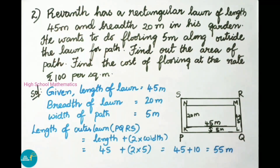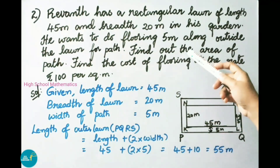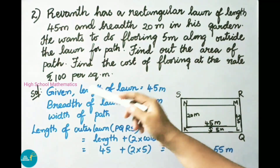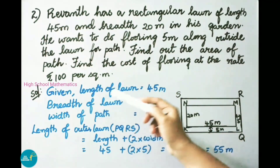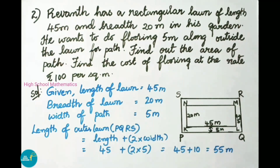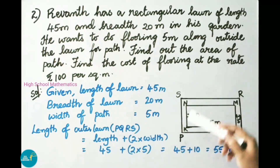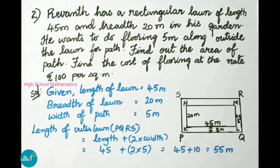Question number two: Raventh has a rectangular lawn of length 45 meters and breadth 20 meters in his garden. He wants to do flooring 5 meters along outside the lawn for the path. Find the area of the path and find the cost of flooring at the rate of 100 rupees per square meter. There is a path around the lawn having width 5 meters.